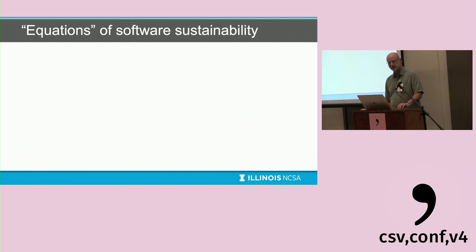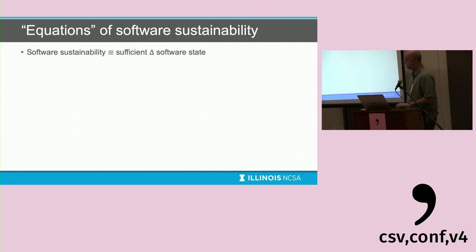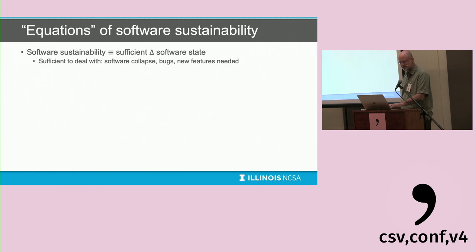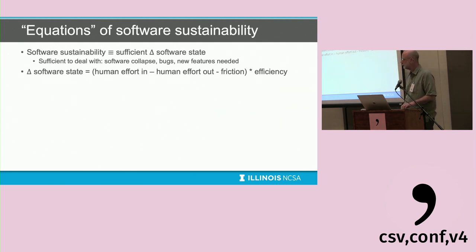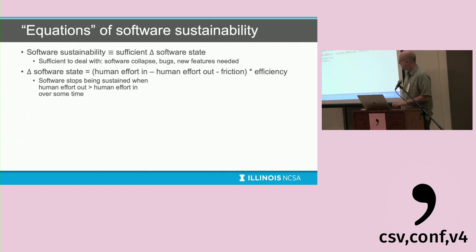I'll now go in a slightly unusual direction and propose some quick equations for software sustainability. Software sustainability can be defined as a sufficient change in software state over time — sufficient to deal with software collapse, bugs, and new features. The change in software state equals human effort in, minus human effort out, minus friction times efficiency. There's friction that makes work harder, and reducing it helps. Software stops being sustained when human effort out exceeds human effort in over time — that's when a project dies.